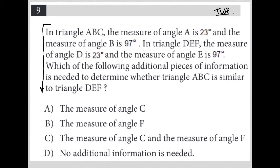The first sentence says in triangle ABC, the measure of angle A is 23 degrees and the measure of angle B is 97 degrees. Let me draw that triangle where this is A, this is B, and this is C. This is 23, this is 97. If A is 23 and B is 97, and all three angles have to add up to 180, 97 plus 23 is 120. Therefore, angle C must be 60.